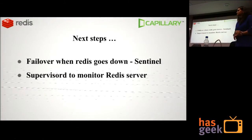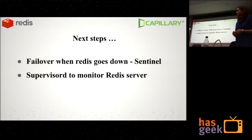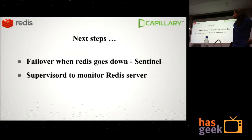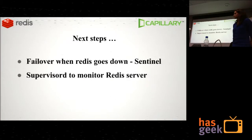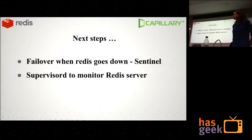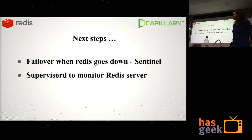One concern that came up was what happens when the server goes down. We have been looking into using Sentinel, which is currently in beta. Sentinel is part of the Redis cluster and manages master-slave promotion — when a master goes down, a slave is promoted to new master. This is our immediate roadmap.